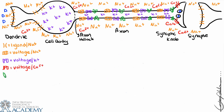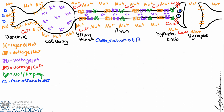We also see the sodium-potassium pump in the axon, and the neurotransmitter is located in vesicles in the synaptic knob as well as outside of the membrane near the dendrite, and we'll get to those in a moment.